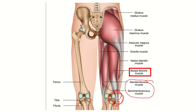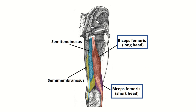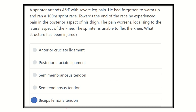That means there is tearing of the tendon of this muscle. Here we can see again: semitendinosus and semimembranosus on the medial side, and the biceps femoris tendon is located on the lateral aspect of the knee joint. The pain is localizing to the lateral aspect of the knee joint, so our answer is the biceps femoris tendon, as it is located in the lateral aspect of the knee joint.